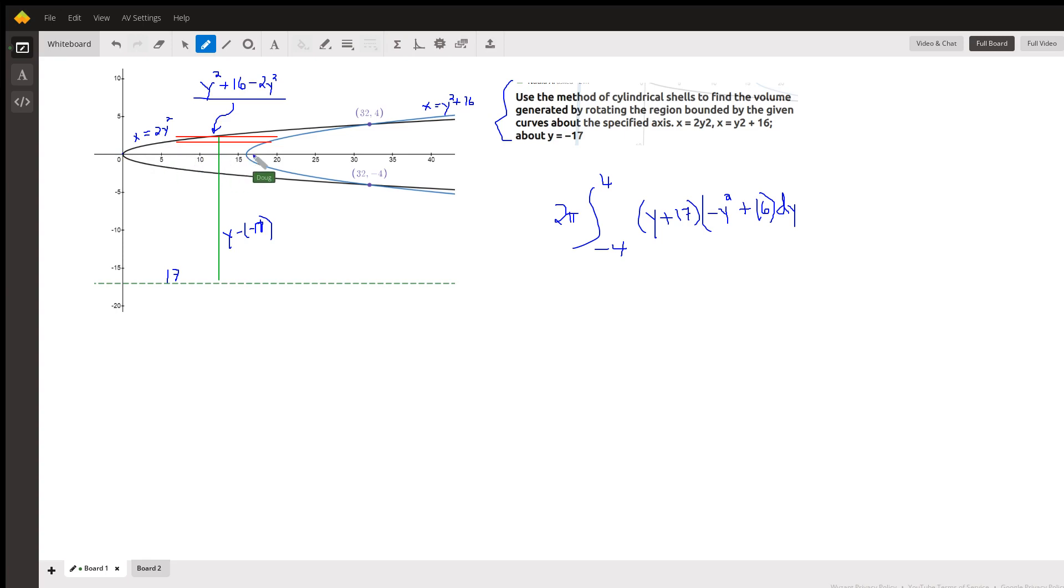And then we have this other parabola, y squared plus 16. And plus 16 moves the vertex to the right, 16 units.